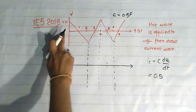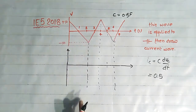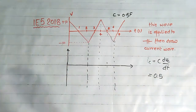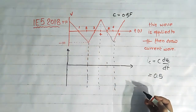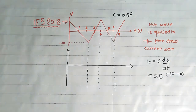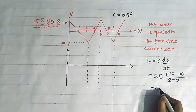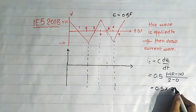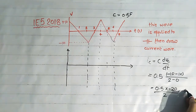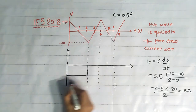For 0 to 2 seconds, the equation of this waveform is a straight line, with voltage changing from +10 volts to -10 volts. The change in voltage dVc is final minus initial, which is -10 minus +10 equals -20, over a time of 2 seconds. So ic equals 0.5 times (-20/2), giving minus 5 amperes from 0 to 2 seconds.